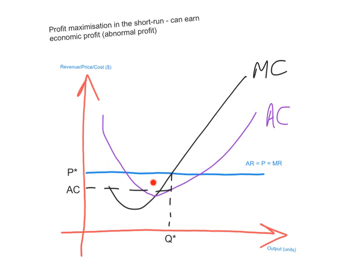The horizontal curve is the average revenue and marginal revenue curve. Profit maximization occurs at the intersection of marginal revenue and marginal cost. Going down from that intersection gives you Q star — the profit maximizing level of output — and P star is the profit maximizing price, which was set by the market, because each firm is a price taker.